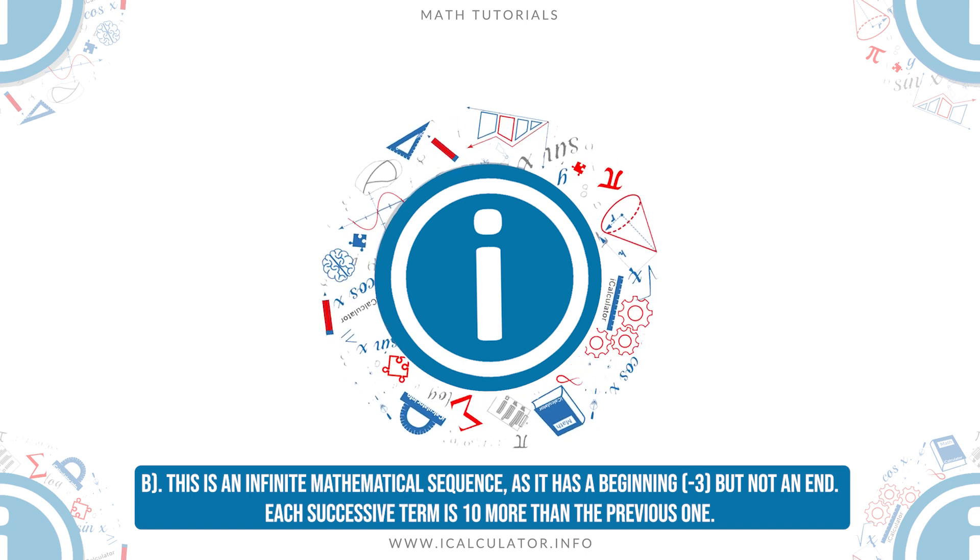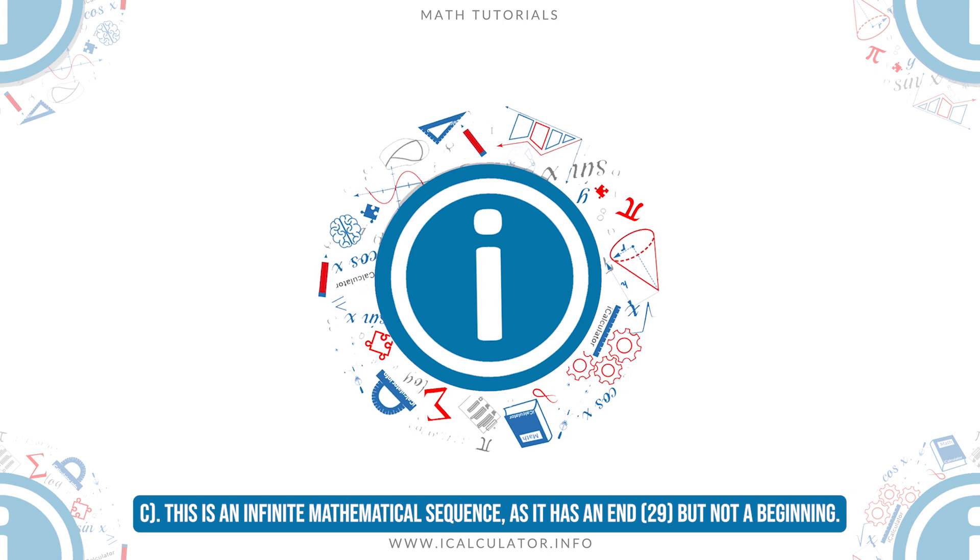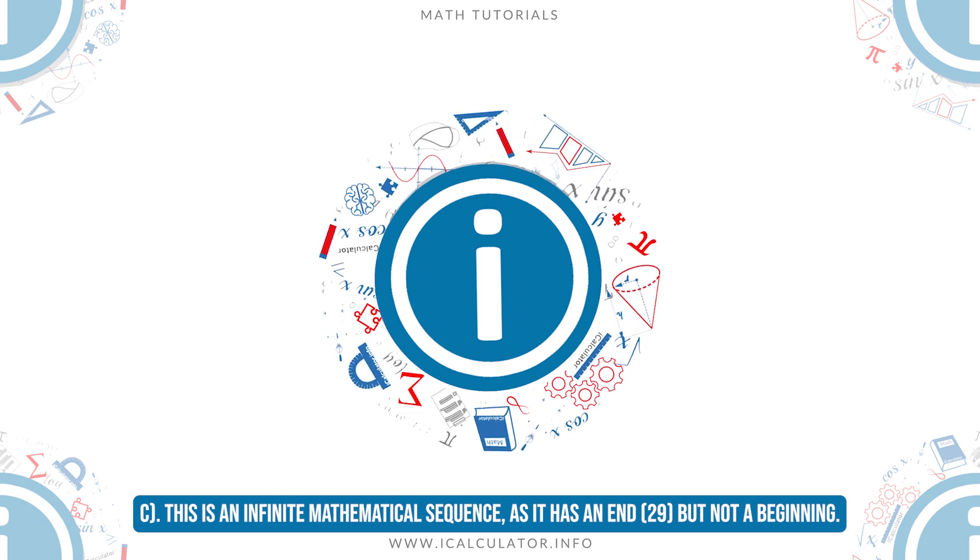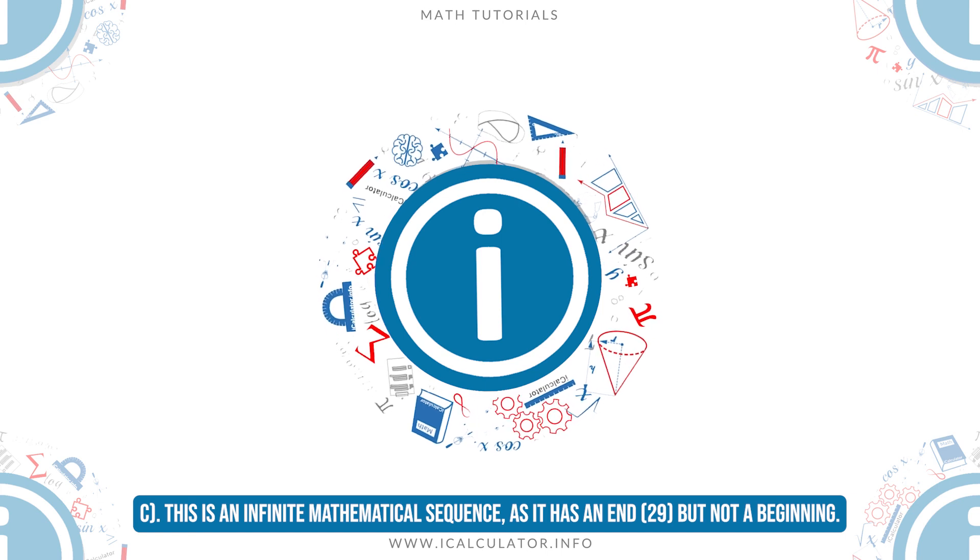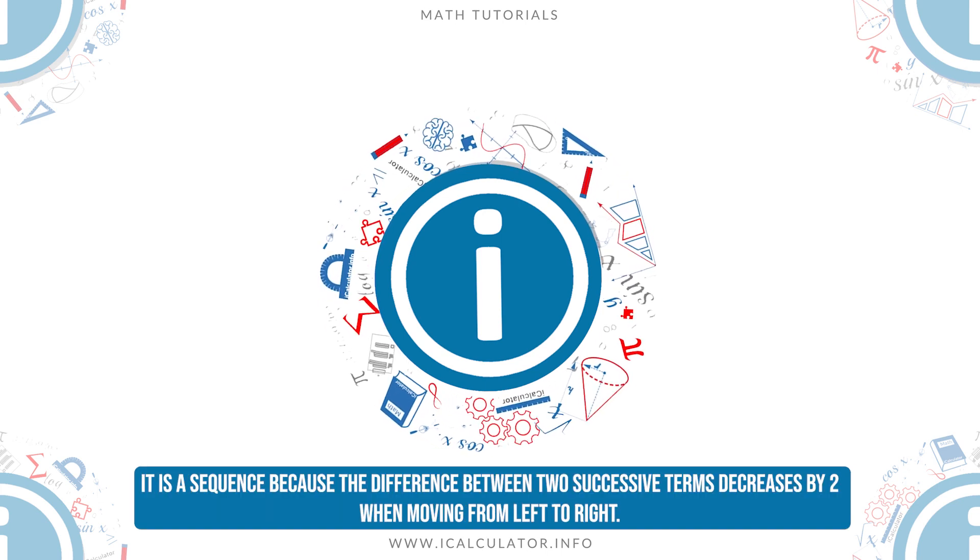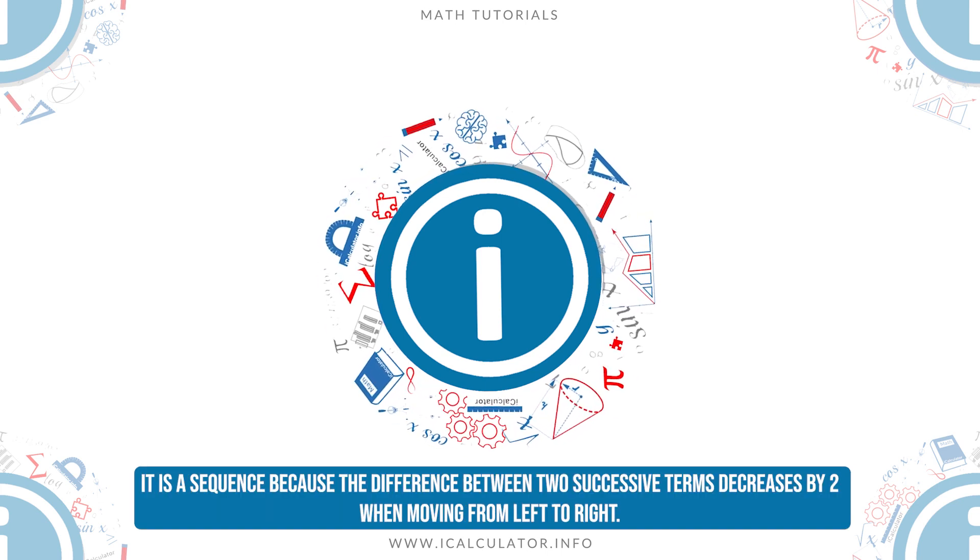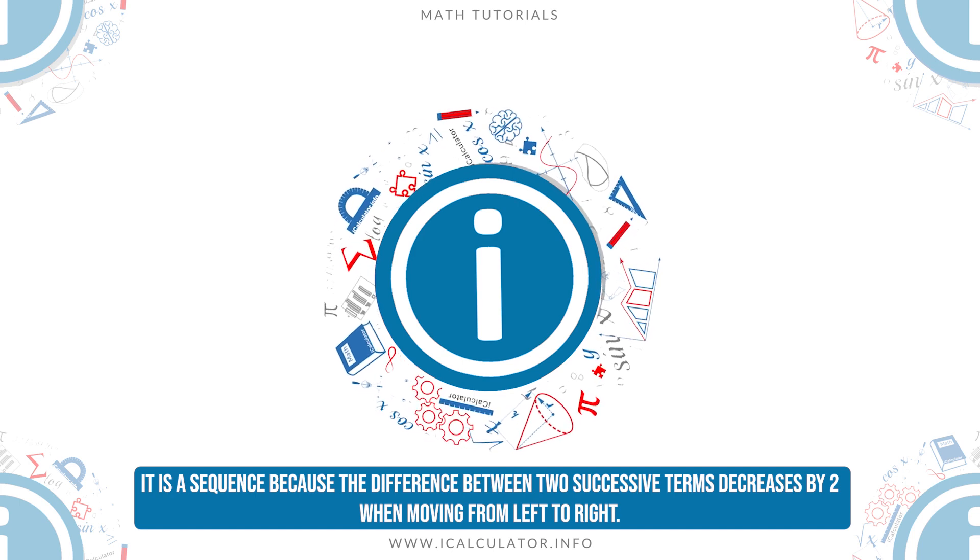C: This is an infinite mathematical sequence, as it has an end, 29, but not a beginning. It is a sequence because the difference between two successive terms decreases by two when moving from left to right.